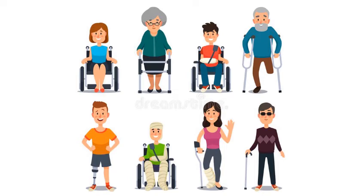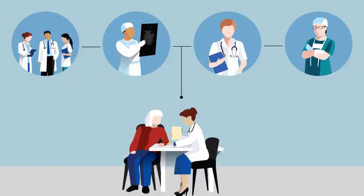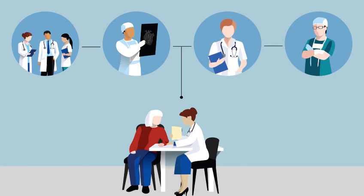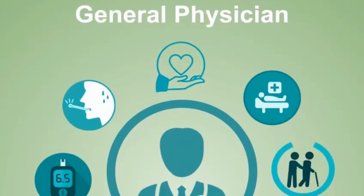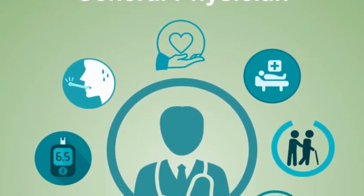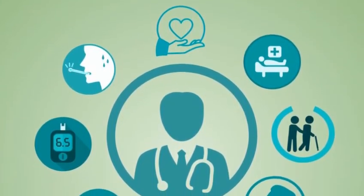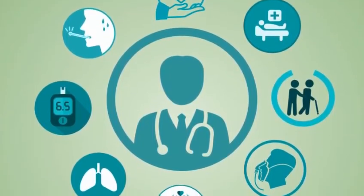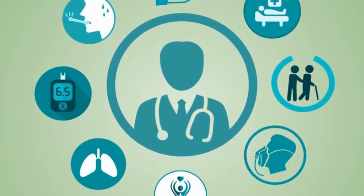If one wants to specialize in nephrology, how does one go about it? First, you have to complete your Fellowship of the College of Physicians — you become a general physician with the FCP, which is a four-year training program. During that, you are required to undertake research, obtain a master's degree in medicine, and then write the college board exams to be certified as a general physician.